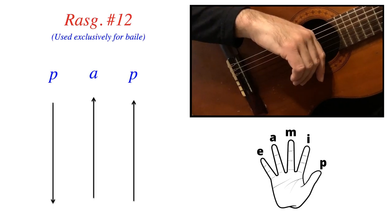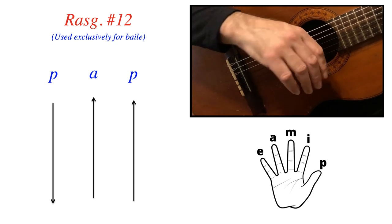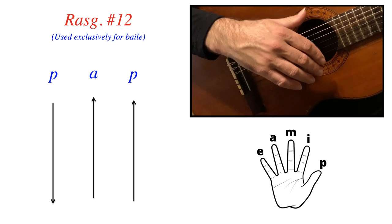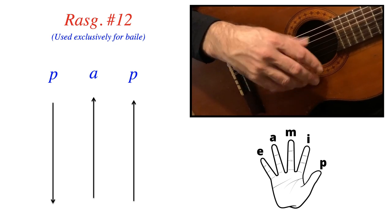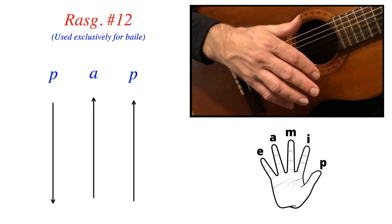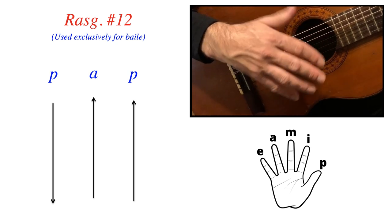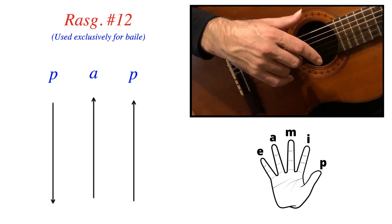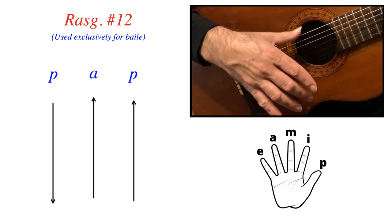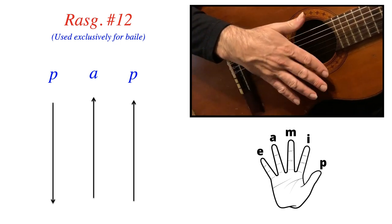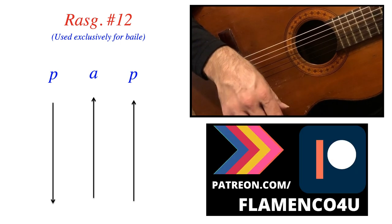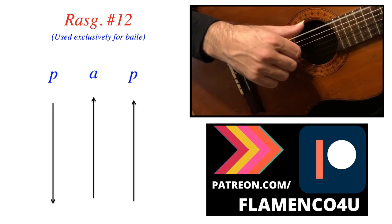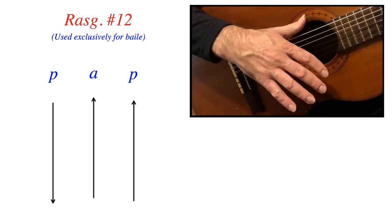Now finally, rasqueado number 12. This one is almost exclusively, with some exceptions, used to accompany baile. It uses just two fingers and involves three strokes, and it's quite different from all the other ones. It's very separated sounding, very clean. So once again, upward P, downward A, and downward P. So that's the first one that we've had where we have a downward P. We still follow the rule with upward P, having to be underneath the first string, striking past the 6, ending up at the top of the rosette.